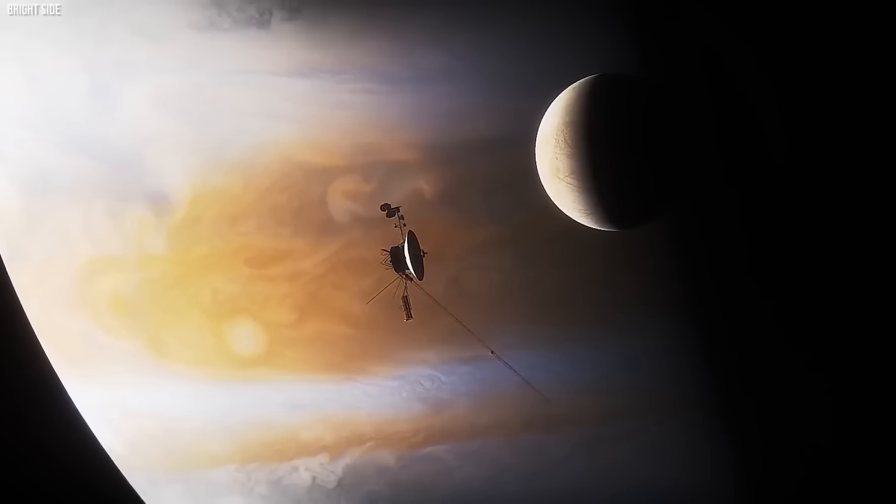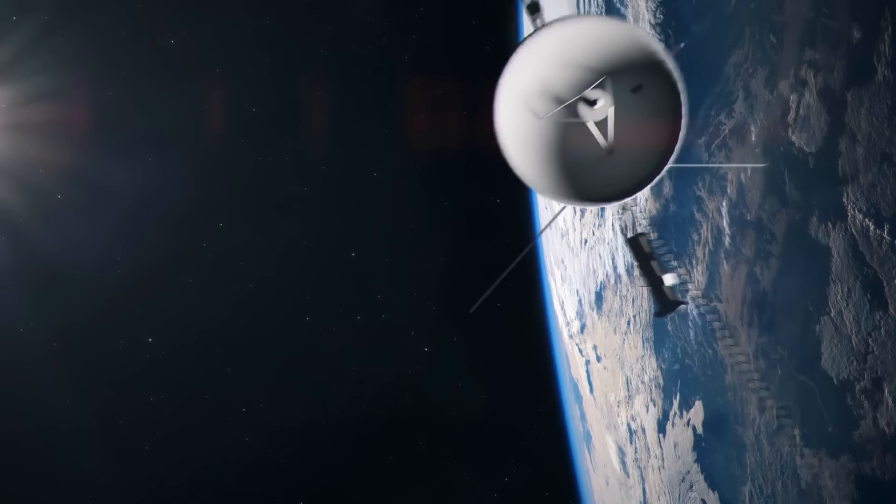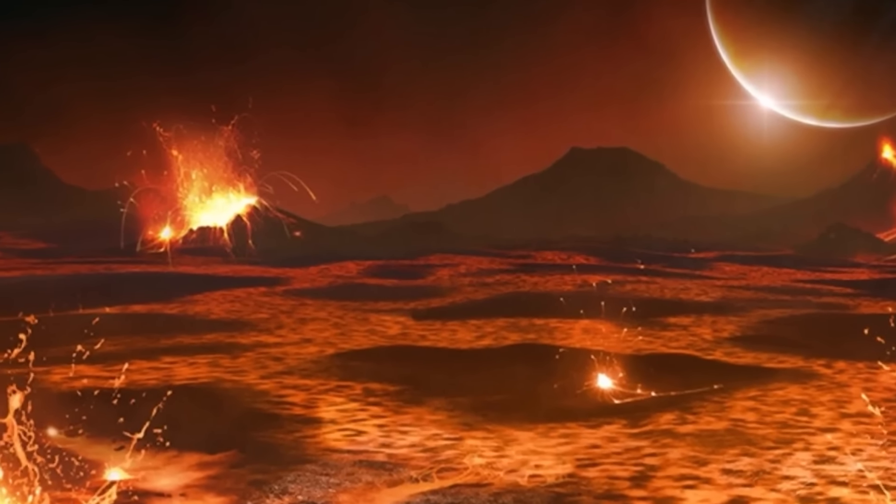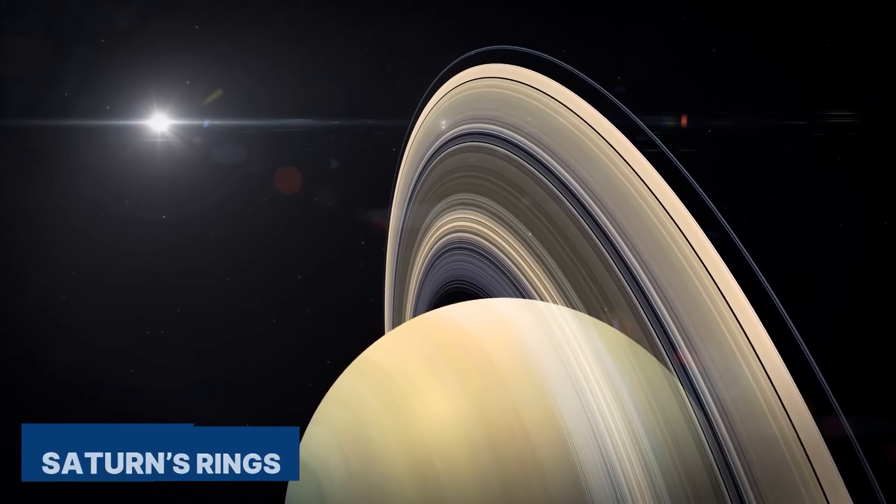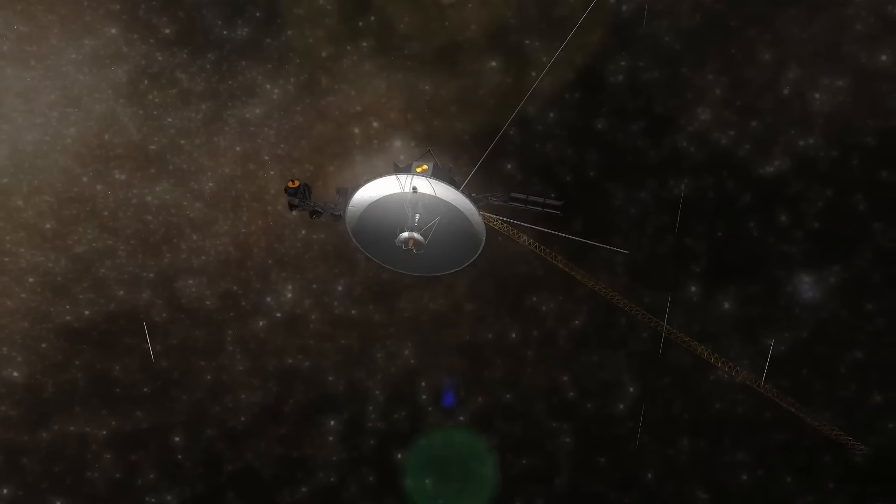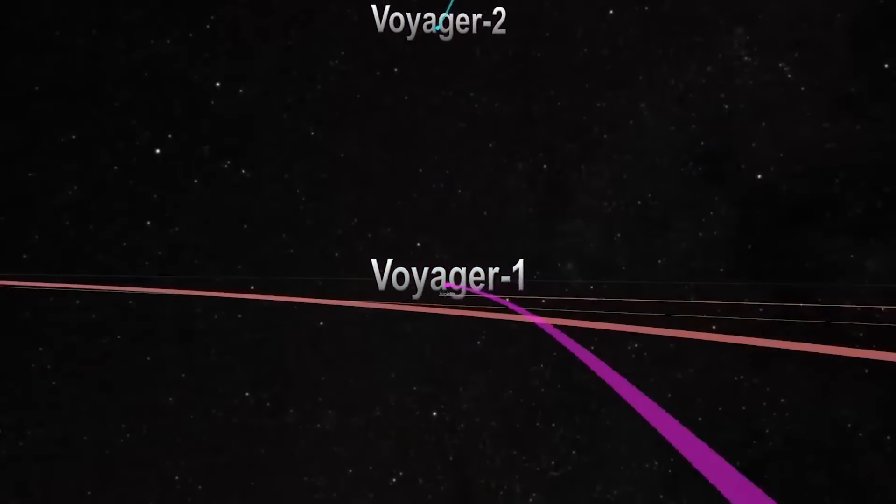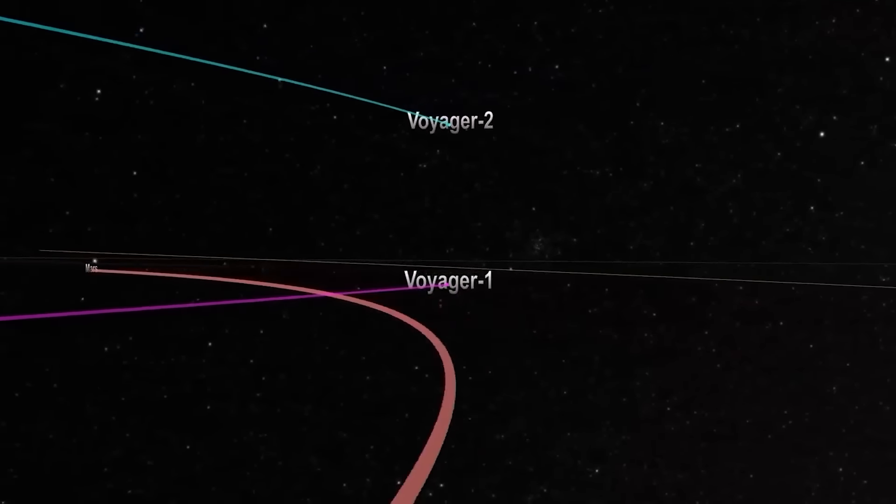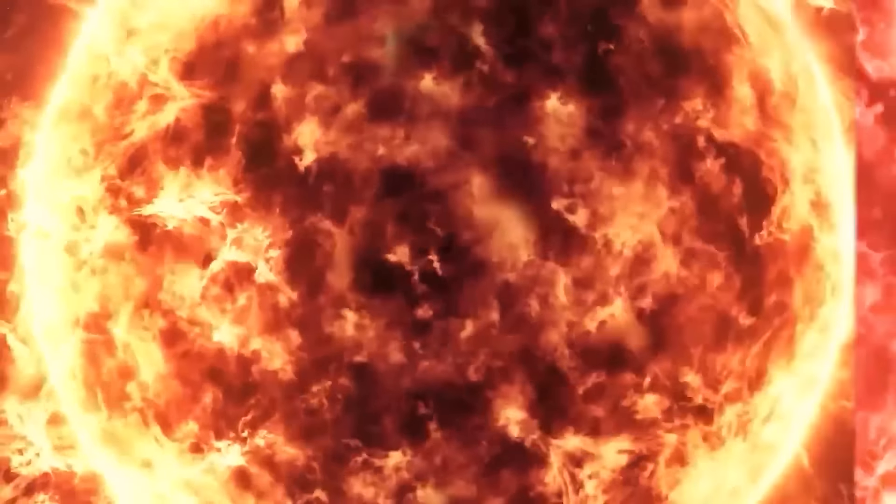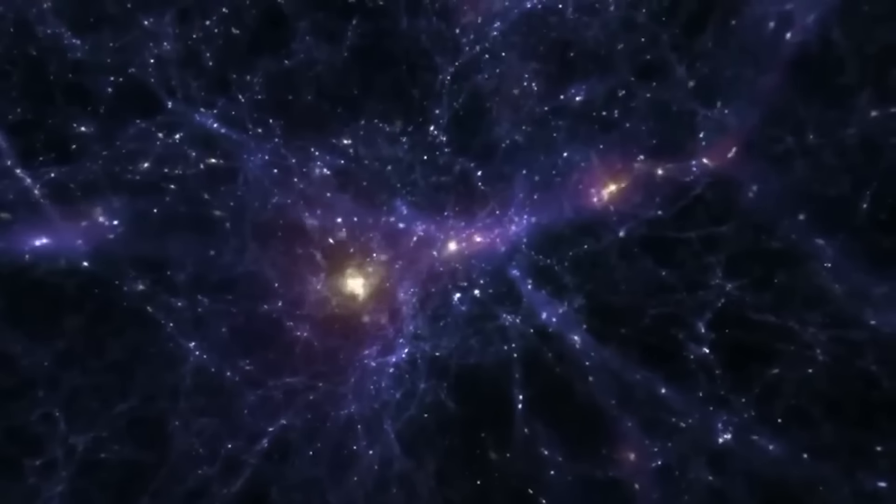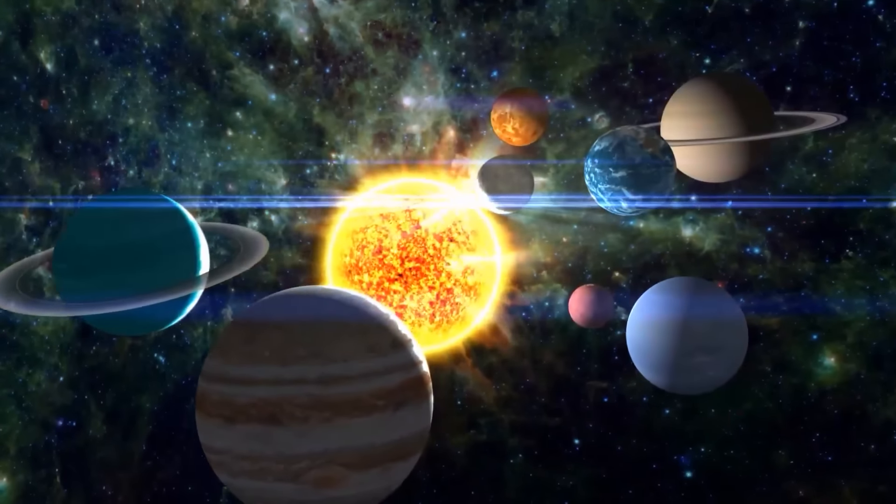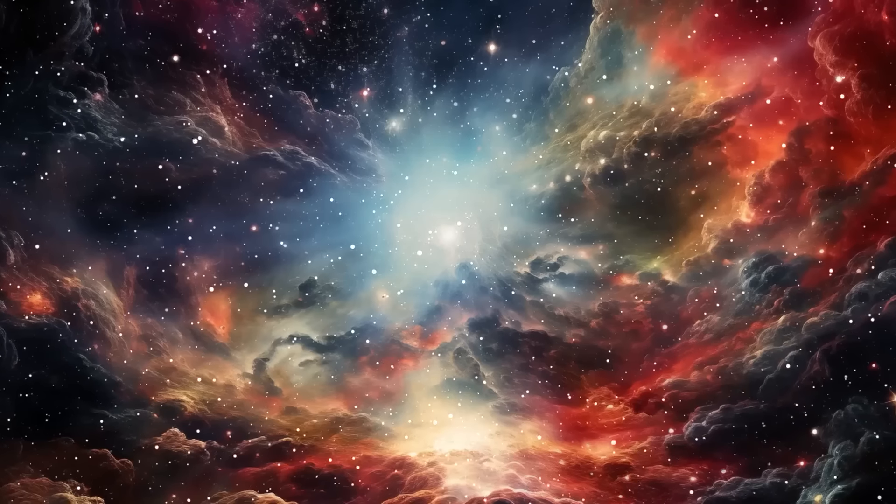The Voyagers' journey has been nothing short of extraordinary. They've captured stunning images of Jupiter's great red spot, discovered active volcanoes on Io, and revealed the intricate beauty of Saturn's rings. After completing their primary mission, the Voyagers continued their journey into interstellar space. Today, Voyager 1 and 2 are the farthest human-made objects from Earth. They've crossed the heliopause, the boundary where the sun's influence ends, and are now exploring the vast expanse of interstellar space. Their data has provided invaluable insights into the nature of our solar system and the universe beyond.